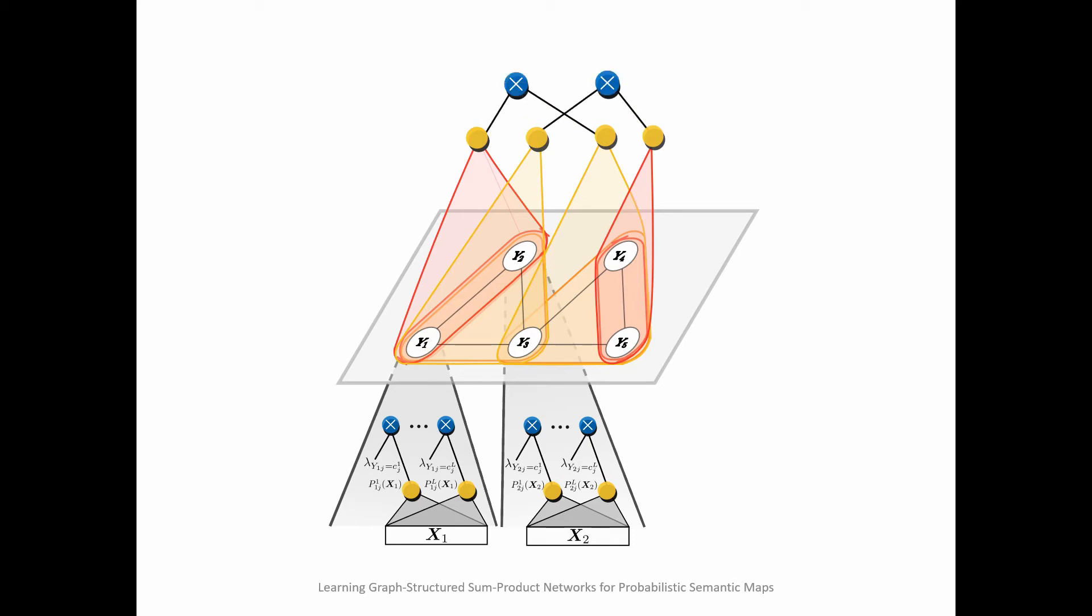We can then combine different template SPNs together using a product node such that the scope of each product node covers the graph completely. We end up with different SPNs for different decompositions of the graph, and we create a mixture model of decompositions using the sum node.